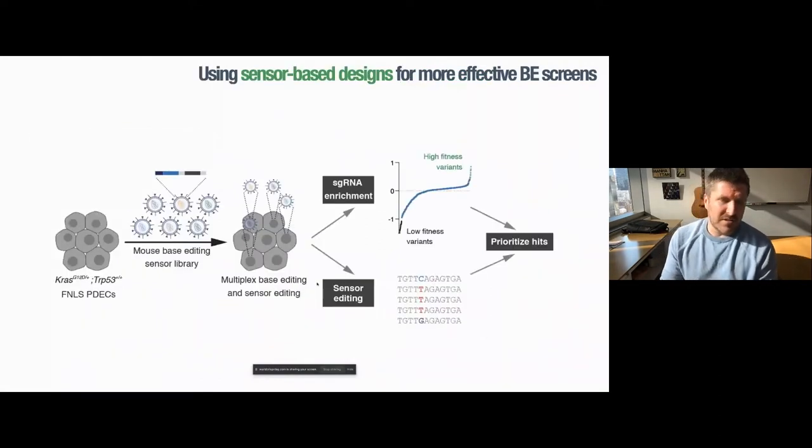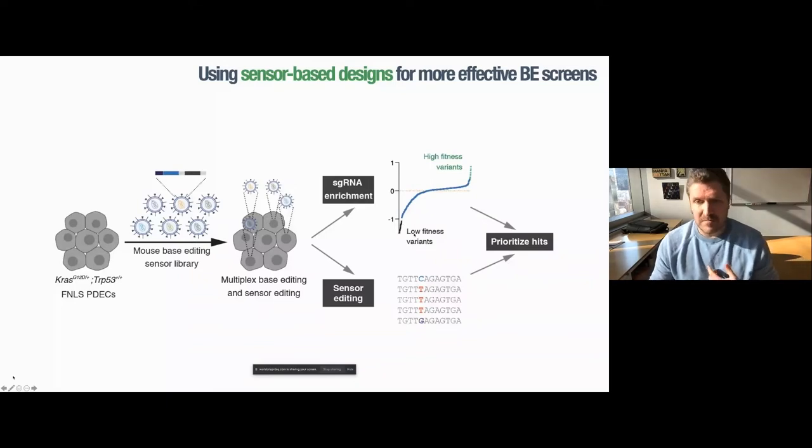One of the other uses of these tools is to use the sensor library itself to do functional screens. In this case, we use the same cells. These are PDEC cells expressing the FNLS base editor. We can introduce the mouse base editing library and then perform any kind of functional screen. In this case, we did the most simplistic screen you could imagine, which was just to put the library in and allow the cells to proliferate. So there's no real selective pressure other than proliferation in the dish. And then you get two types of information out of these screens. You can calculate sgRNA enrichment, so whether you had low fitness variants or high fitness variants, in this case proliferation, as well as whether you saw editing at the surrogate sensor site, so whether the guide RNA was actually active. And then you can use both of these metrics to ultimately prioritize hits.